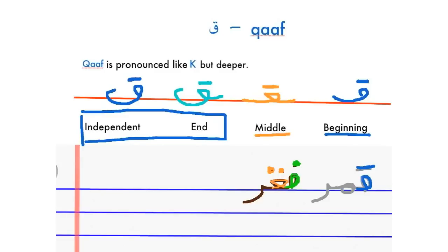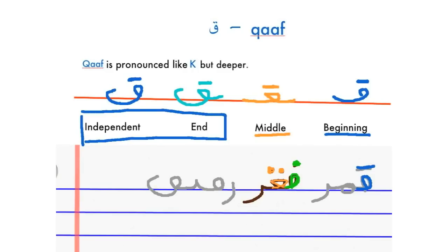Here you can see the contrast between the letter FA and Qaf. At the end in its connected form, it appears like this in the word 'Rafiq,' which means friend. An example for independent form is the word 'Fawq,' which means above.